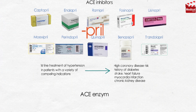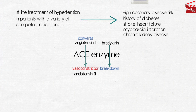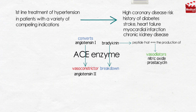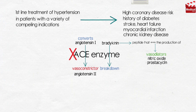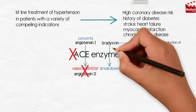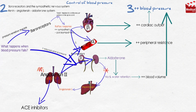These drugs block the enzyme ACE, which converts angiotensin-1 to the potent vasoconstrictor angiotensin-2. ACE is also responsible for the breakdown of bradykinin, which is a peptide that increases the production of the potent vasodilators nitric oxide and prostacyclin by the blood vessels. So the net result of inhibition of ACE would be decreased angiotensin-2 and increased bradykinin levels, leading to vasodilation of both arterioles and veins.